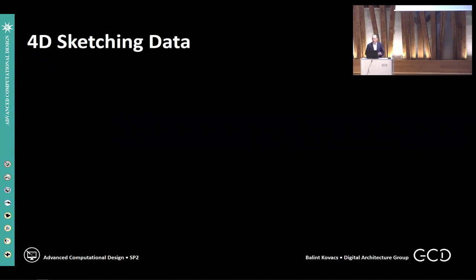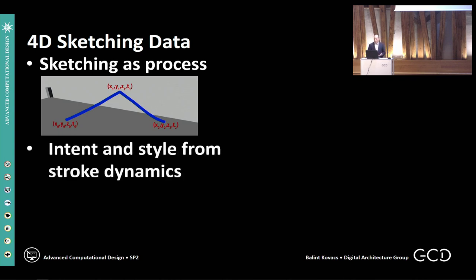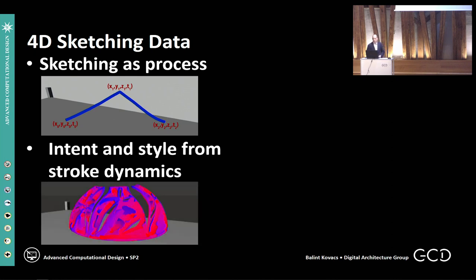We are also interested in sketching as a process. Beyond the sequence of 3D coordinates, we also capture the temporal aspect of their creation. The dynamics of a brushstroke carry information about intent and allow exploration of techniques such as style transfer. We use this visualization of stroke dynamics with a heat map as a function of drawing speed. We use adaptive velocity thresholding and adaptive speed constraints in knowledge-based algorithms and adaptive approximations to convert conceptual sketch strokes into suitable B-spline representations.